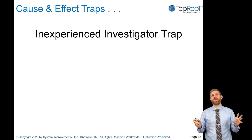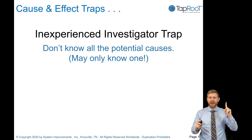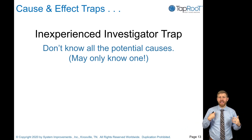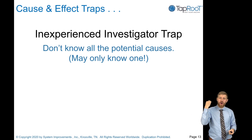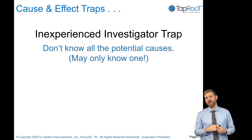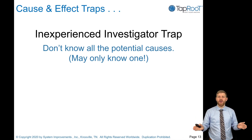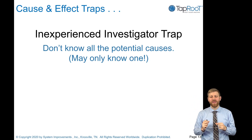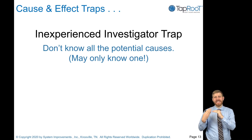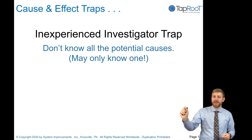This leads to two traps. The first is the inexperienced investigator trap — you don't know all the potential causes. New supervisors without experience in a department would stop at surface-level things, take information at face value, and not dig further because they didn't know what questions to ask or what areas to investigate. They might only find one cause and stop — they didn't look at the whole process.